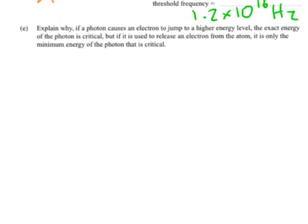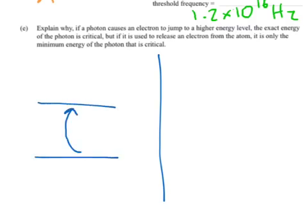E. Explain why if a photon causes an electron to jump to a higher energy level, the exact energy of the photon is critical. But if it is used to release an electron from the atom, it is only the minimum energy of the photon that is critical. Okay, well, we've got two situations. We've got where it's jumping from one energy level to another. It's an electron. So, in this situation, the energy of the photon has to be equal to the energy difference between the two levels.